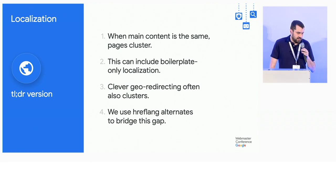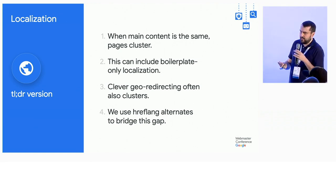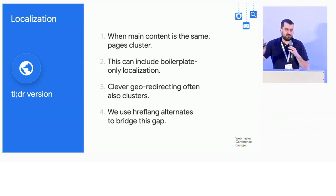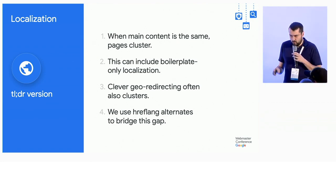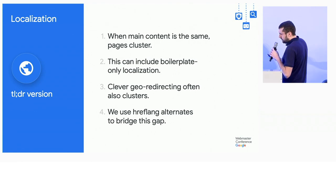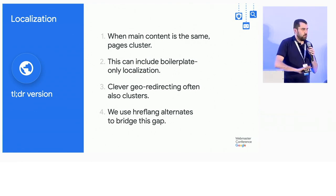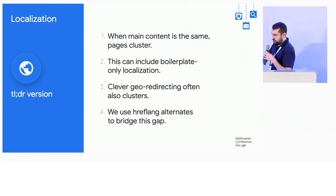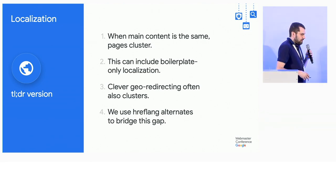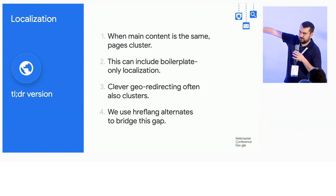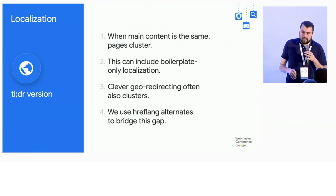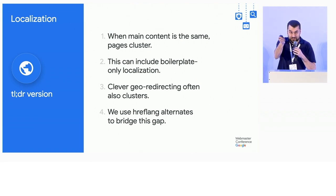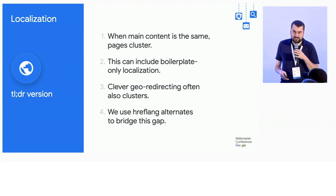On localization: most of the time when you think localization, you have a French version and a German version of your page, and they have nothing to do with web deduplication because the content is completely dissimilar. Where deduplication does get involved is when you have the same language, different country, or someone uses geo redirecting so that to us it all looks like the same page and everything gets jammed into one cluster. We also see cases where people localize only the boilerplate — we throw out the boilerplate and it looks like the same page. In these situations, we're hoping you'll tell us what to do with your hreflang tags.